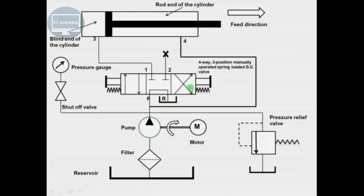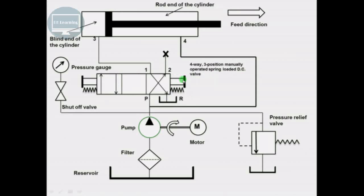When we operate the direction control valve such that the spool of the four-way direction control valve is in the right envelope mode, from port P it will try to go to a particular port, but it is blocked.